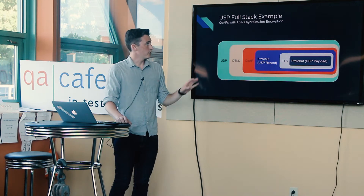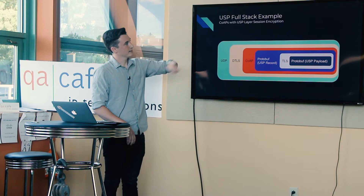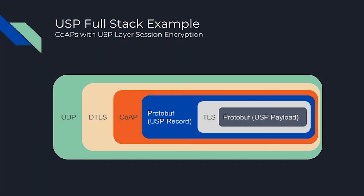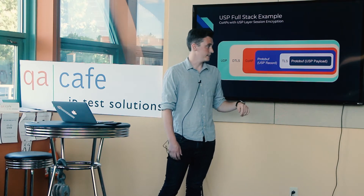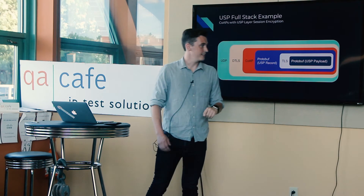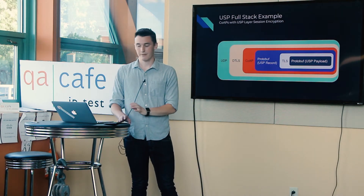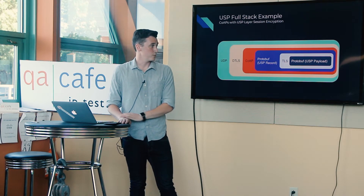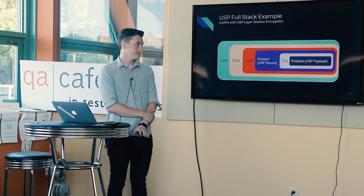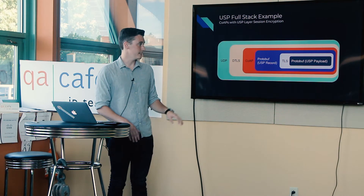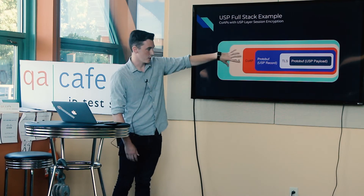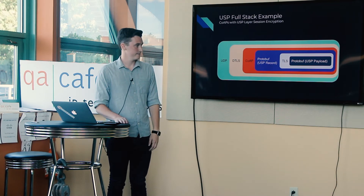Here's a fuller stack example using CoAPs with a secure session at the USP layer. Underneath CoAP is UDP, then there's a DTLS secure layer, which wraps the CoAP message, which contains the USP Record encoded with protobuf, and inside that is a payload which is TLS-encrypted, containing a USP payload also encoded with protobuf. There are quite a few layers, but a lot of it is interchangeable — the CoAP part could be Stomp or WebSockets.